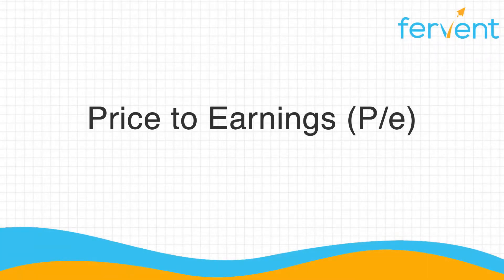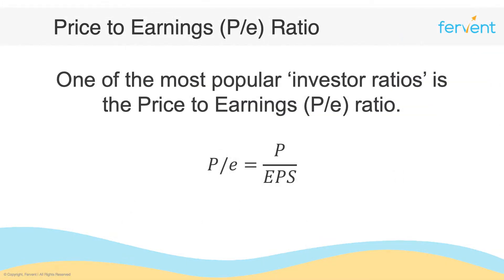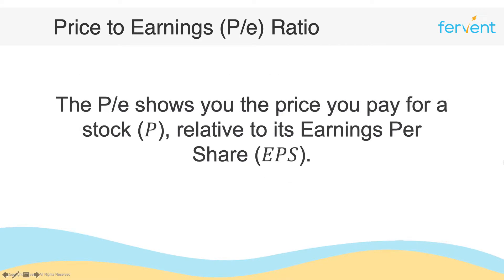In this video, we're going to explore the price-to-earnings ratio, also known as the price-to-earnings multiple. This is one of the most popular investor ratios and is calculated by simply taking the price of a stock P and dividing it by the earnings per share, or EPS. The P/E ratio shows you the price that you pay for a stock relative to its earnings per share — how much you're paying for every dollar of profit the firm earns.